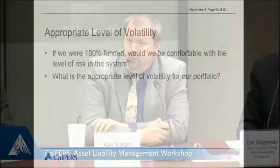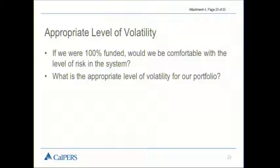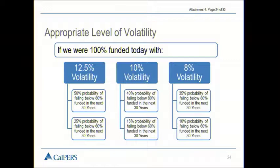In terms of the appropriate level of volatility, one of the questions I always ask myself is: if we were 100% funded today — which is our goal — are we going to be comfortable with the level of risk in the system? Because if the answer is no, and we're targeting 100% funded, that means we're targeting a level of risk that we don't really want. We took a look at: if we were 100% funded today and invested with about a 12.5% volatility, what's the probability of falling below 80% funded at some point in the next 30 years? The answer is about a 50% chance.